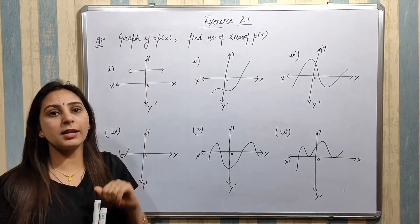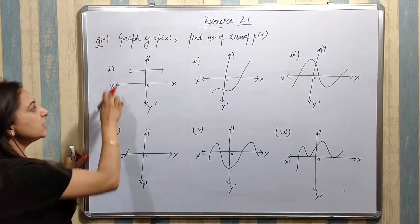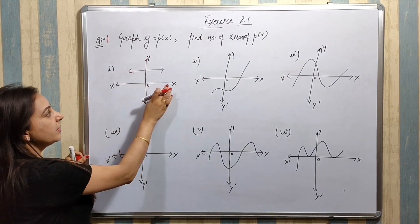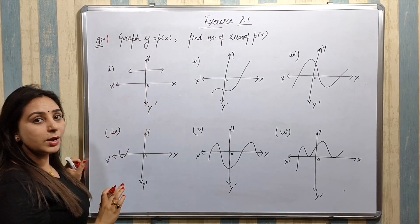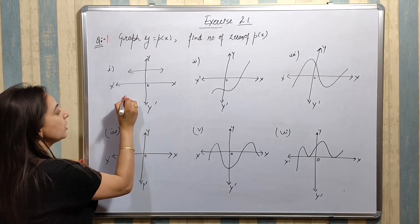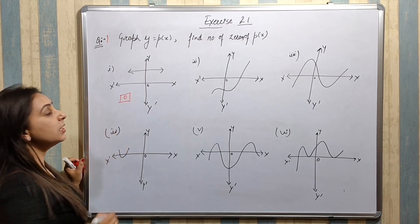First example me, yeh graph diya, y is equals to p of x. Ismae dhekho x-axis me kitni time intersect hua hai. Ek bar bhi intersect nahi hua. To number of zeros kitni nikal jayegi? Zero, because ek bar bhi graph x-axis pe intersect nahi hua hai.